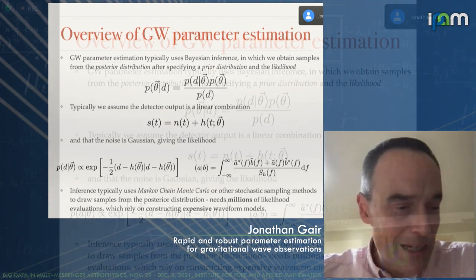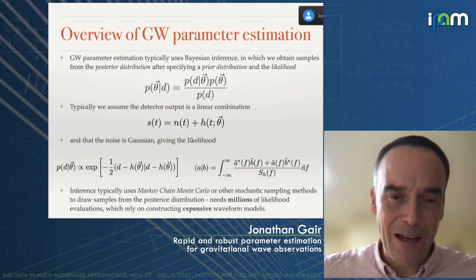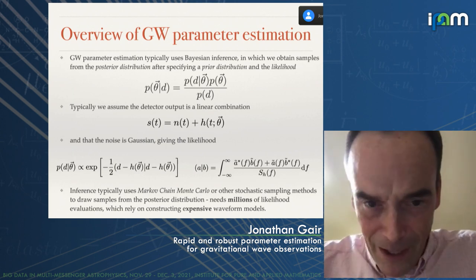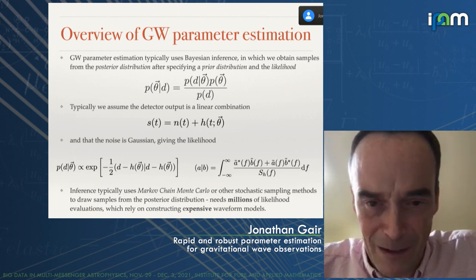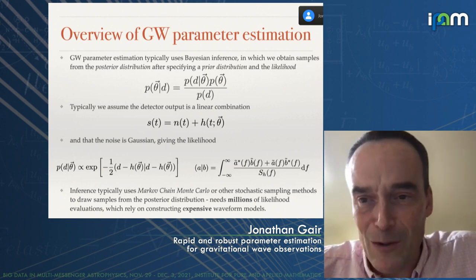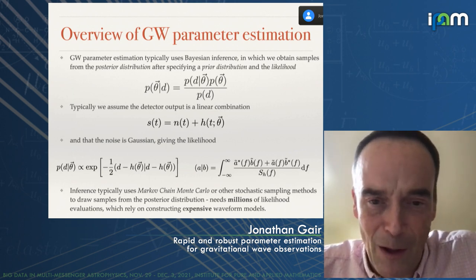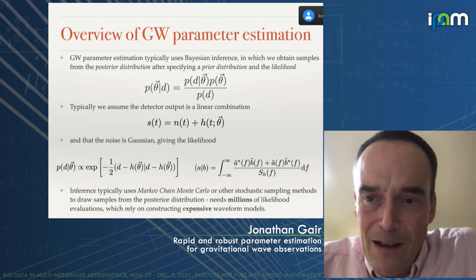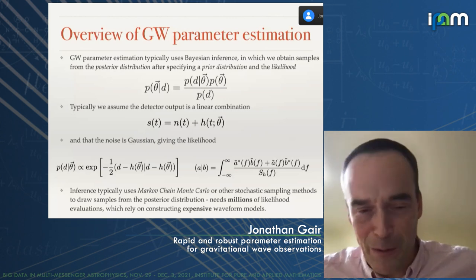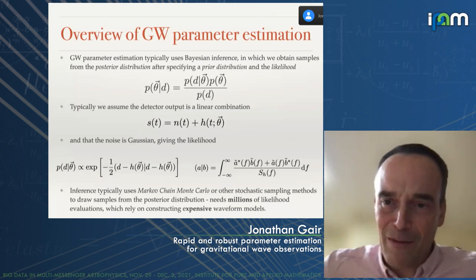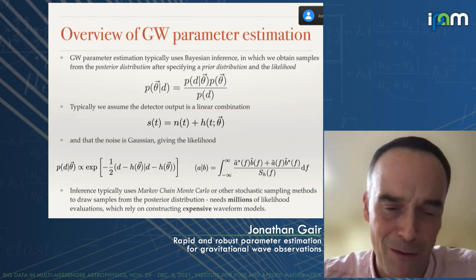This updating process is encapsulated in Bayes' theorem. P(θ|d) on the left-hand side is the posterior, related to P(d|θ) the likelihood, and P(θ) the prior, normalized by P(d) the evidence — basically an integral of the numerator over all parameter choices. To do Bayesian inference you need to specify a prior, which is typically straightforward, although in population inference that prior itself depends on parameters you want to learn from combining observations of many different events.